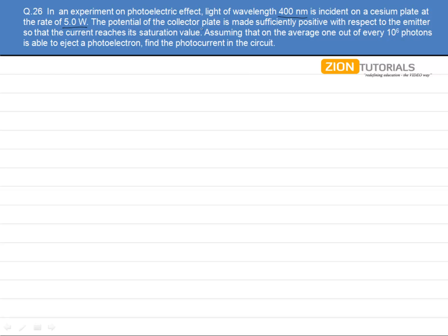The potential of the collector plate is made sufficiently positive with respect to the emitter so that the current reaches its saturation value. Assuming that on the average, 1 out of every 10^6 photons is able to eject a photoelectron, find the photoelectric current in the circuit.